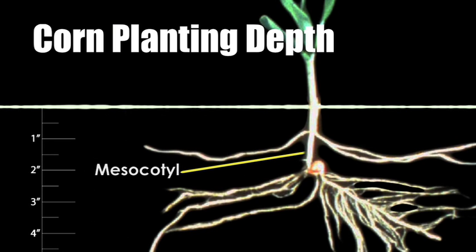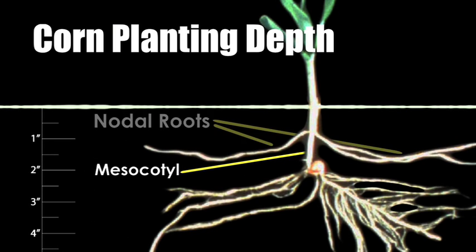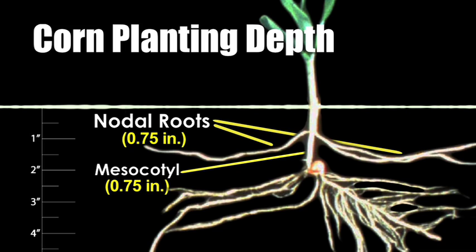The five main rings of the root system — called the nodal roots — will actually come out above where the corn seed is planted, and they will typically be in the top inch of soil. So if you've got a mesocotyl that's a minimum of about three quarters of an inch deep, and the five rings of nodal roots at bare minimum are also three quarters of an inch, well, you're already at an inch and a half.